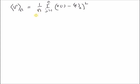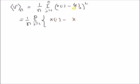We want to derive a recursive formula for this variance at the nth term. This can be rewritten as 1/n times the summation from j=1 to n. We rewrite the inner term using the recursive formula for the sample mean: x̄(n) = x̄(n-1) + (x(n) - x̄(n-1)) / n.